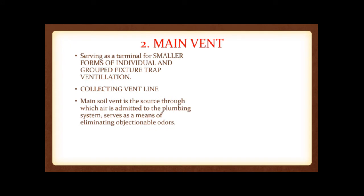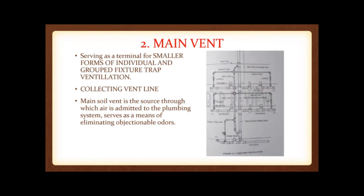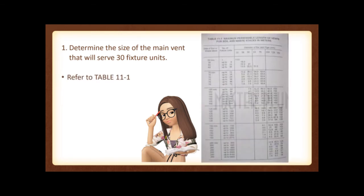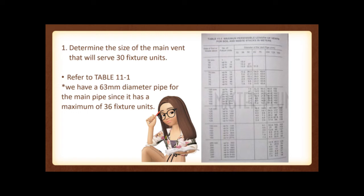The main soil vent is the source through which air is admitted to the plumbing system and serves as a means of eliminating objectionable odors. To determine the size of the main vents: Example 1 — determine the size of the main vent that will serve 30 fixture units. According to the table on maximum permissible length of vents for soil and waste stacks, a 63 mm diameter pipe is required for the main pipe since it has a maximum of 36 fixture units. Example 2 — how large is the main vent required for 4 water closets, 4 lavatories, 3 showers, and 2 kitchen sinks installed on the first floor of a 2-story building 6 meters high?